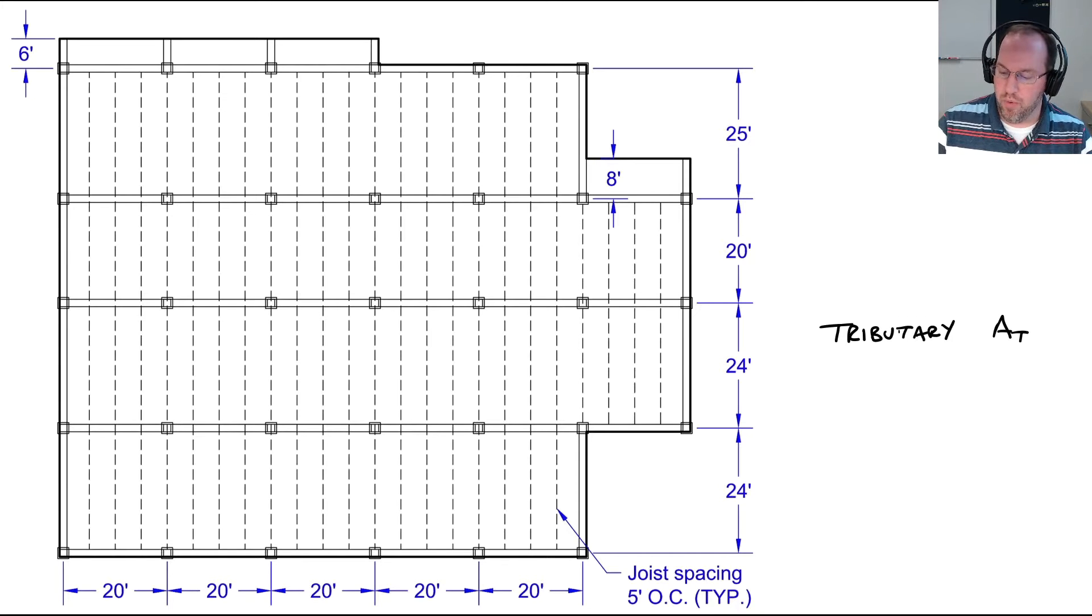Let's look at a typical interior joist. That joist is going to be collecting half the load to the west and half the load to the east, so we have a total width of five feet and a span length of 24 feet for a tributary area of 120 square feet.